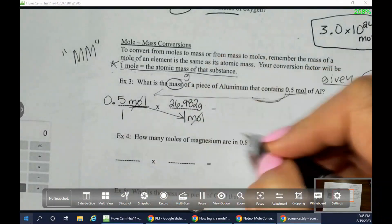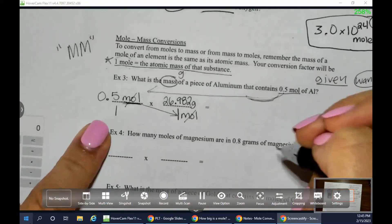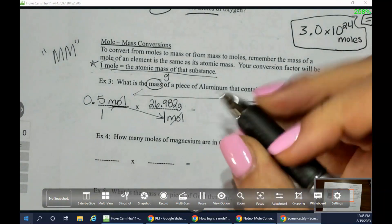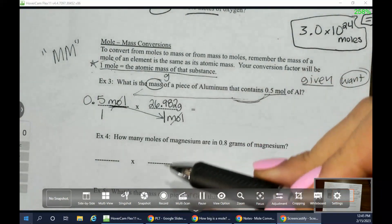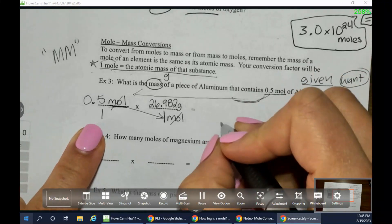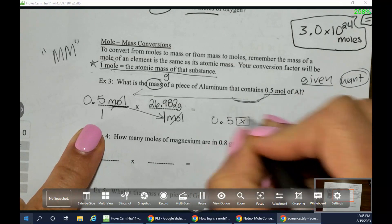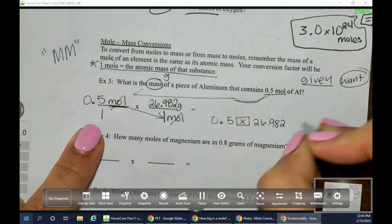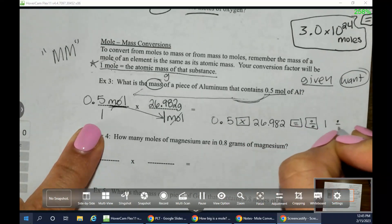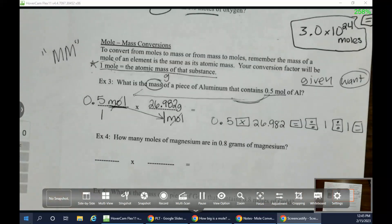So we have what we want on top. Moles got cancelled out, so we're in a good spot. So this is another example where we only have ones on the bottom. I know it's kind of annoying, but make sure you're still running through that process of how you're going to be typing it in the calculator because it's not always going to be ones on the bottom. But for this one, what I would do when I type it in, I'm going to type in 0.5. I'm going to say times 26.982 equals, and I'm going to immediately push divide 1, divide 1, and then push equals again.